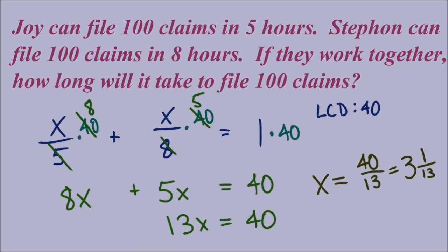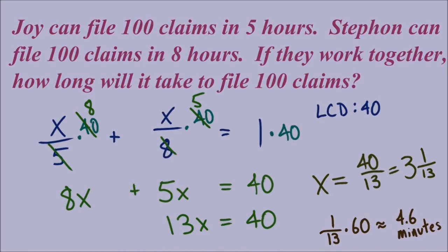It might be interesting to know exactly how many minutes that is. Since 60 minutes is one hour, we need one-thirteenth of 60 minutes. 60 over 13 is approximately 4.6 minutes. So it will take 3 hours and 4.6 minutes.